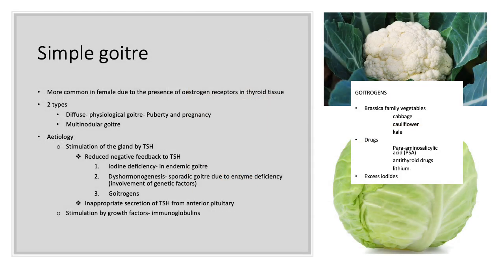Simple goiters are goiters with a clinically and biochemically euthyroid state. They are more common in females, suggesting the presence of estrogen receptors in thyroid tissue. They can be diffuse or multinodular. Diffuse simple goiters occur during increased thyroxine requirements in puberty and pregnancy — this is called physiological goiter. Simple diffuse goiters can also arise as endemic or sporadic goiters. The sequence of changes leads diffuse goiters to become multinodular goiters over time.